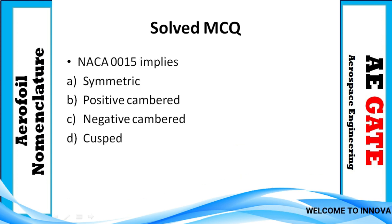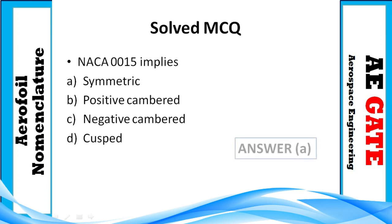MCQ 6: NACA 0015 implies — (A) symmetric, (B) positive camber, (C) negative camber, (D) curved type. Since the first two digits are '00', the camber is absent, meaning it is a symmetric airfoil. The correct answer is A.